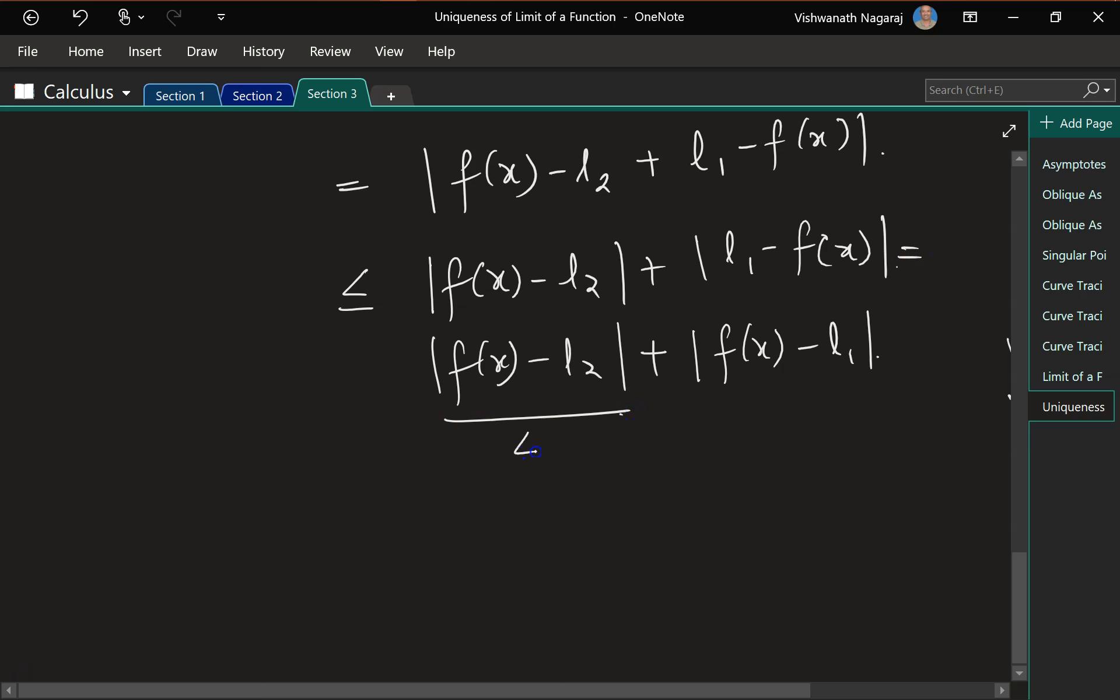Now this is less than epsilon. This is less than epsilon. So which means we can say that l1 minus l2 is less than 2 epsilon. x minus a, this condition remains.